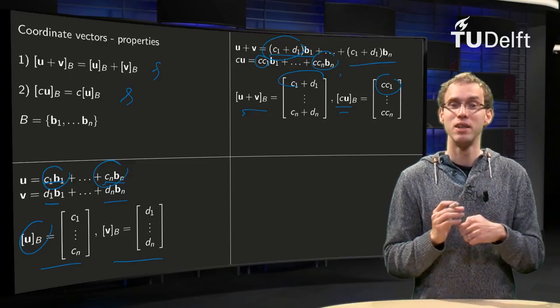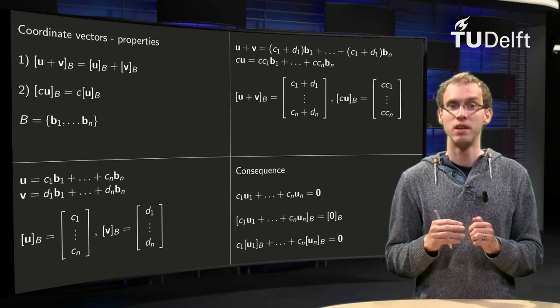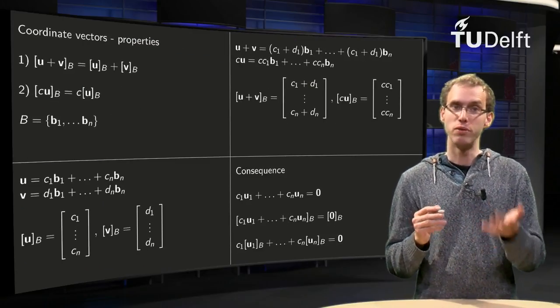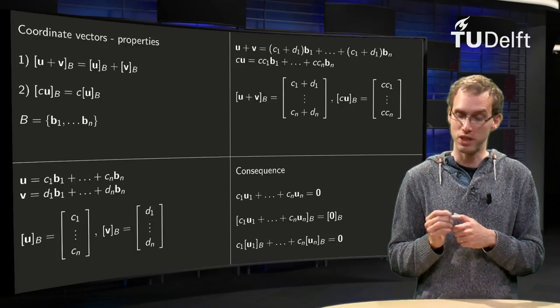How can we use that? Well, for example, if you look at linear independence, what's the consequence of this? Suppose you look at the equation c1 u1, c2 u2, up to cn un equals 0.